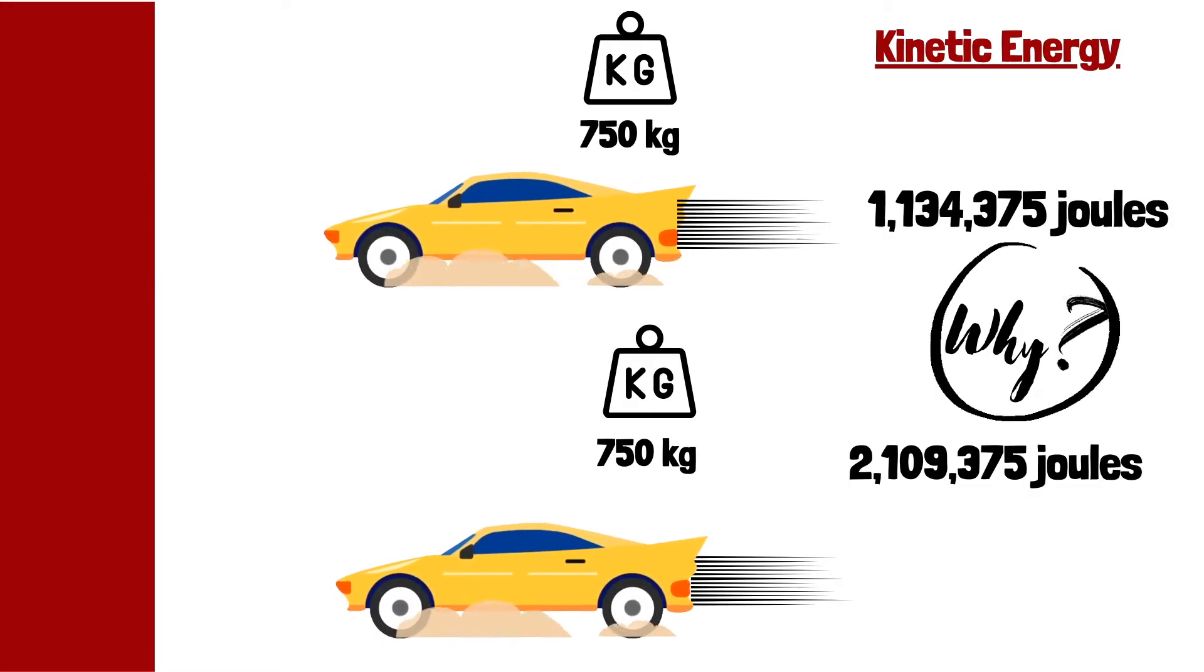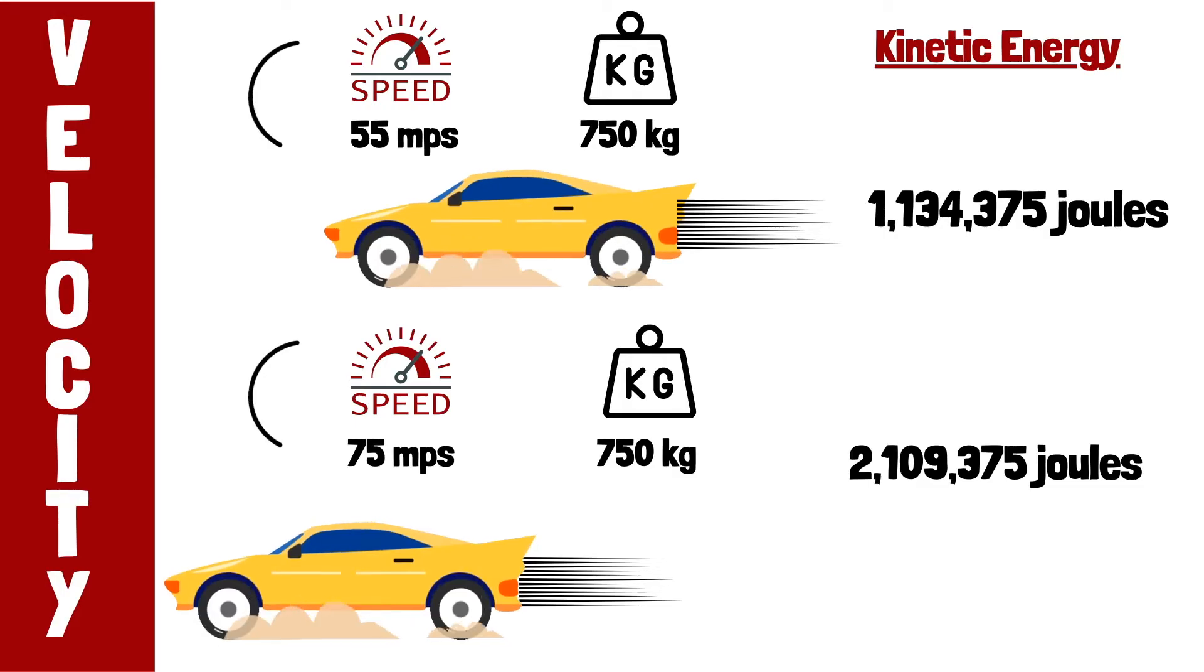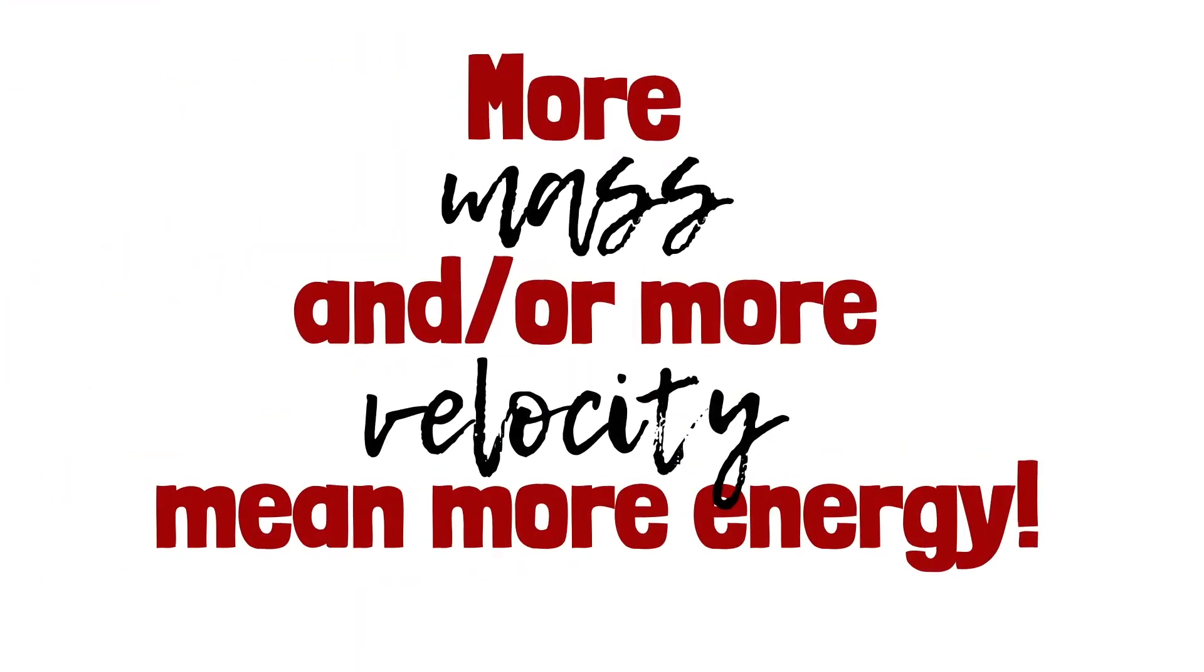Well, in this case the velocity of the car on the bottom is 75 meters per second, but the velocity of the car on the top is 55 meters per second. And this shows us that both mass and velocity contribute to kinetic energy. More velocity means more kinetic energy.